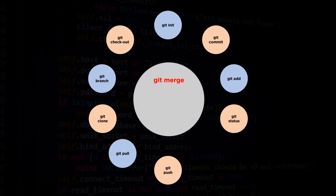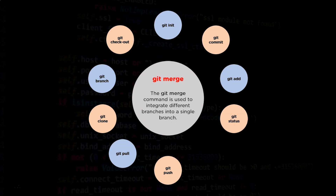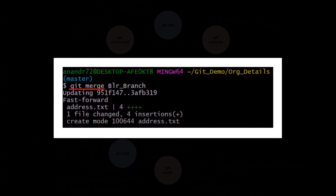Next let's have a look at the git merge command. The process of merging can be defined as a way of putting a forked history back together. The git merge command is used to integrate different branches into a single branch. It lets you take the independent lines of development created by the git branch command and integrate them into a single branch.